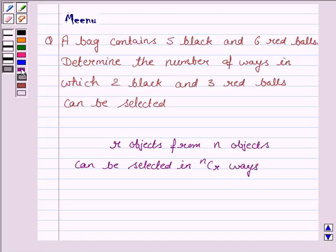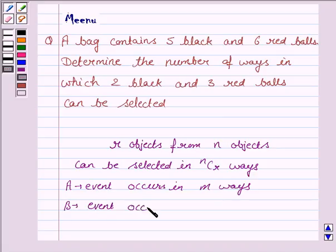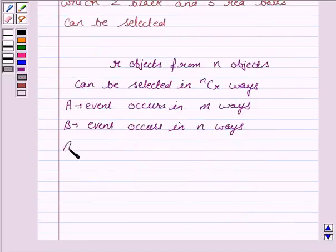And we should also know the fundamental principle of counting which says, if event A occurs in M different ways and event B occurs in N different ways, then event A and B occur in M into N ways.